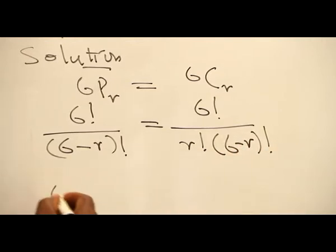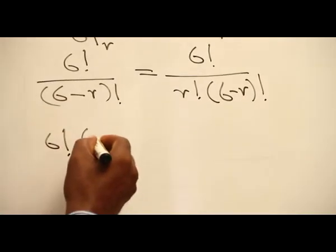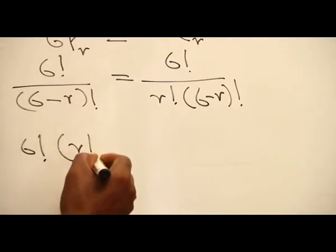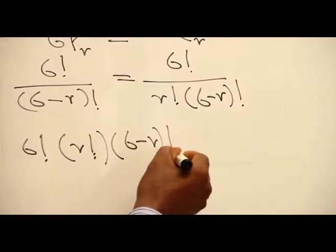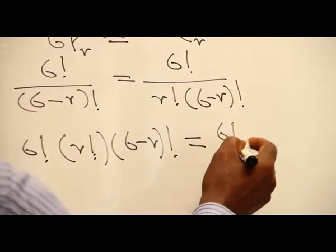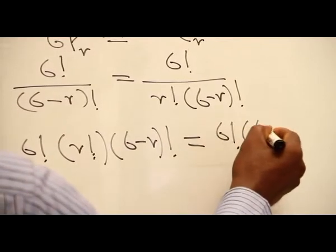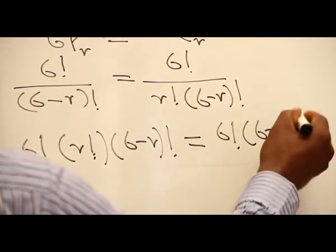Now cross multiply by r factorial and (6-r) factorial to get 6 factorial times r factorial times (6-r) factorial equals 6 factorial times (6-r) factorial.